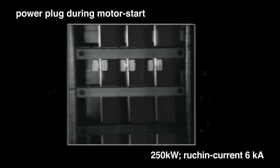During the simulation of a 250 kilowatt motor start, a common typical operation, the flashing arc at the contact points already takes place.